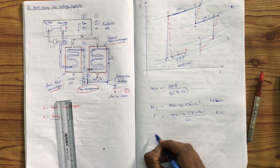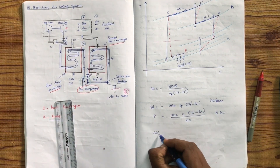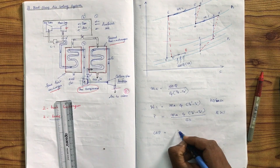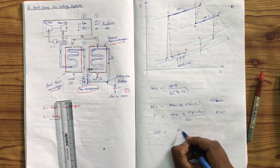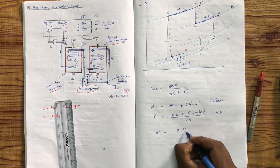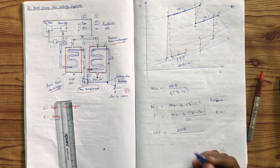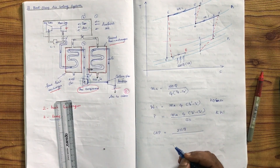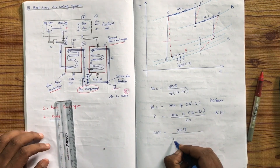What is the COP? We are calculating the COP. The COP is the refrigeration power available divided by the power input, which is also available in the denominator.